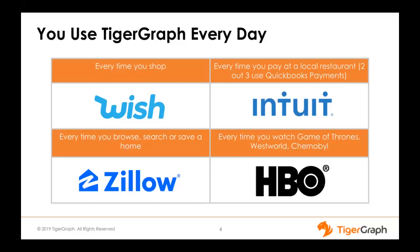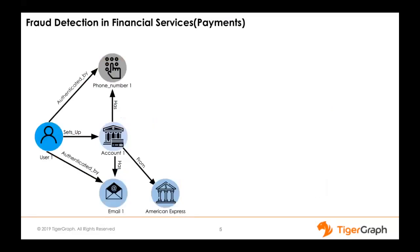If you watch HBO — Game of Thrones, Westworld, Chernobyl — we are also working in the back end to do entity resolution and recommendation. Let me take an example from financial services for fraud detection, one of the most popular graph use cases.